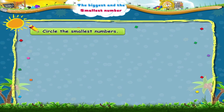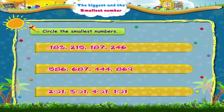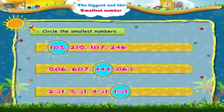Now circle the smallest of these numbers. In the first set, the smallest number is 444. In the third set, the smallest number is 101.